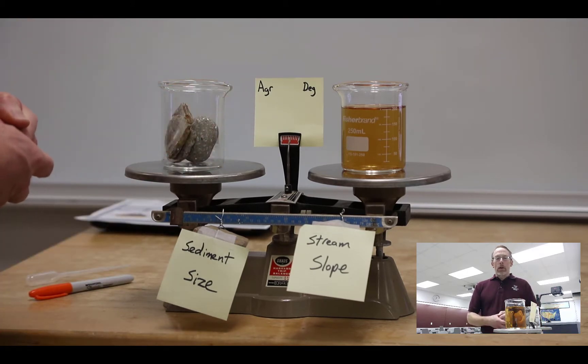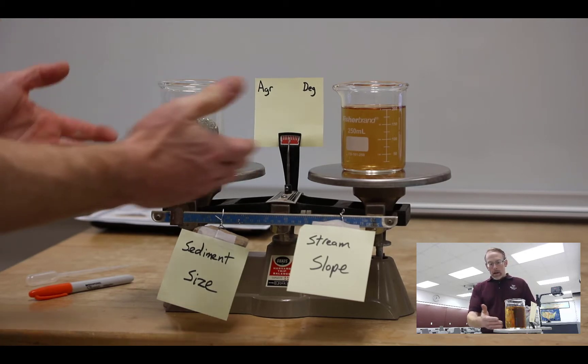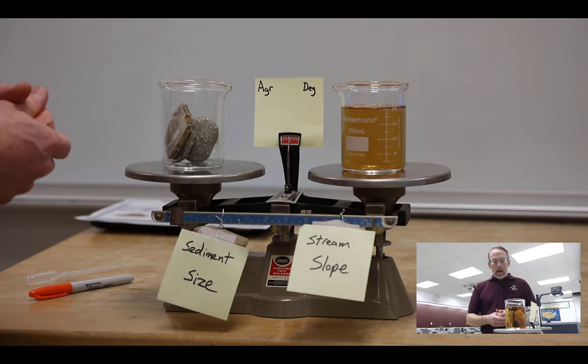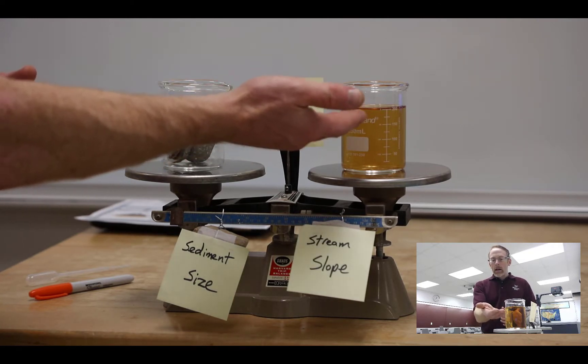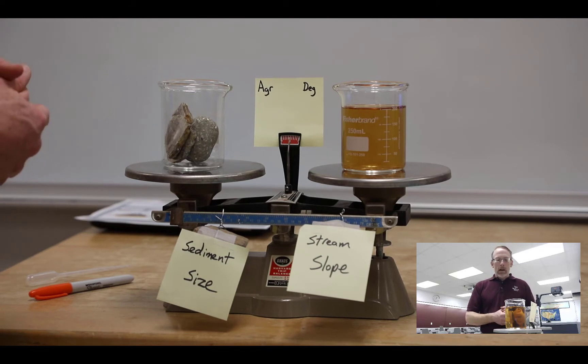The idea here is to give you an opportunity to see an actual Lane's balance in operation. I've modified a standard beam balance here. We've got tea on one side—the tea just adds a little color to the water to make it more visual. We've got some rocks that represent the sediment in our system in the beaker on this side.